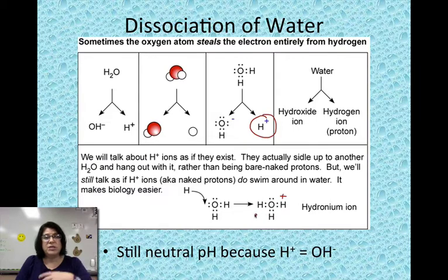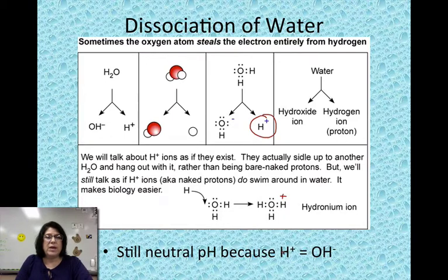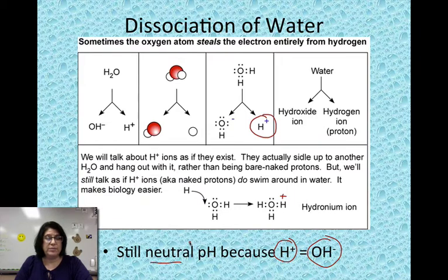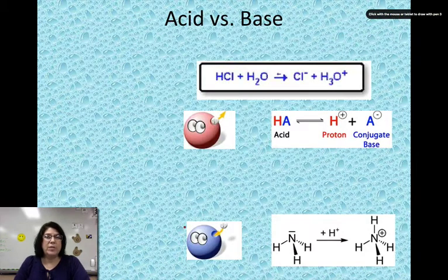If this were just in a glass of water, the pH of that solution would still be neutral. pH is a measurement of the comparison of how much hydrogen there is compared to how much hydroxide ion there is. When those numbers are equal, we call that neutral — and that is 7 on the pH scale. So let's talk about when it's not 7.